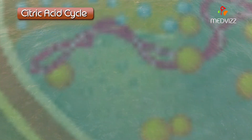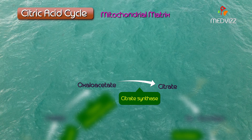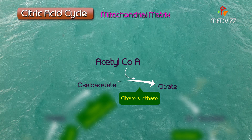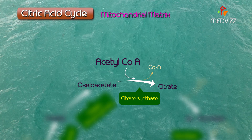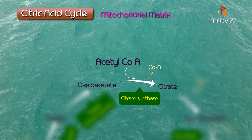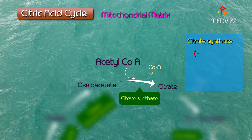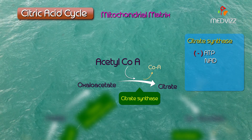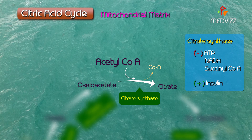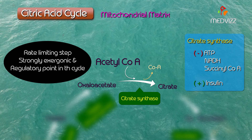The citric acid cycle, or the tricarboxylic acid cycle, or the Krebs cycle, takes place in the mitochondrial matrix. Citrate synthase is the enzyme that catalyzes the transfer of the two-carbon acetyl group from acetyl-CoA to oxaloacetate, forming the 6-carbon molecule citrate. Citrate synthase is inhibited by ATP, NADH, and succinyl-CoA, and it is stimulated by insulin.